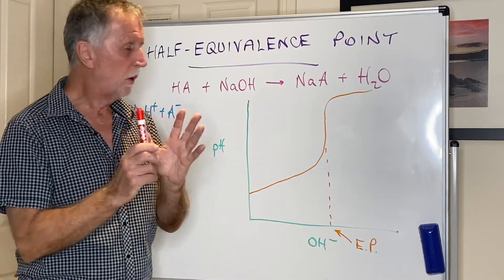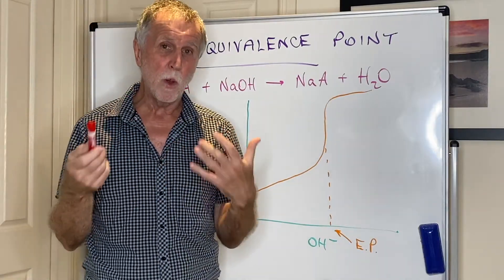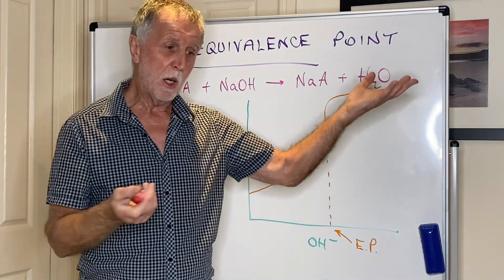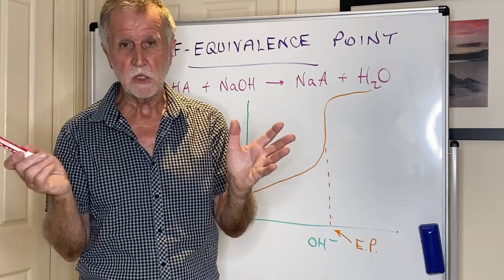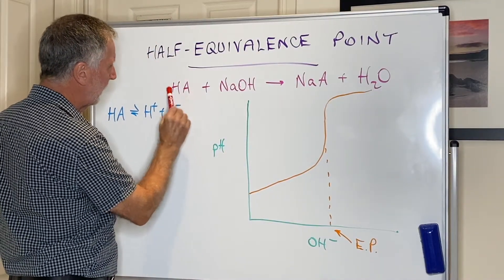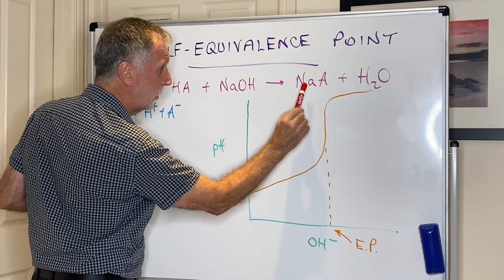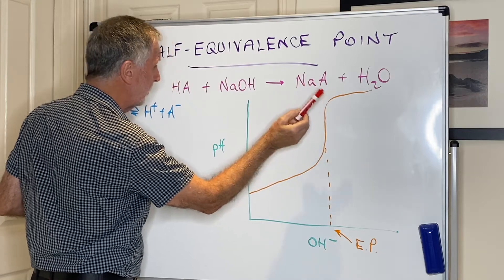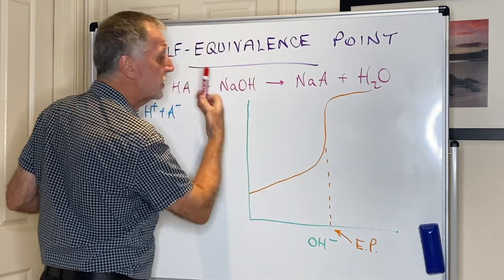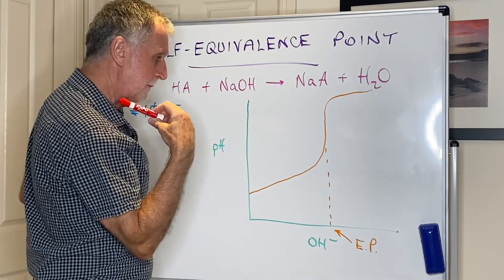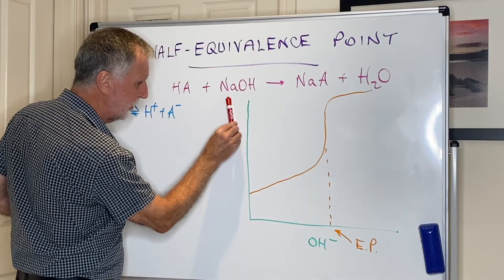We're looking at a weak monoprotic acid HA — monoprotic means it has one hydrogen it can lose as a proton. Acids like sulfuric acid H₂SO₄ are diprotic. When HA reacts with NaOH it produces the salt of that weak acid — for example, sodium ethanoate — and water. This is a neutralization reaction.